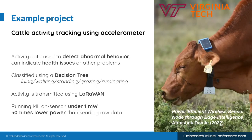Here's an example of a practical project analyzing cattle activity using an accelerometer. A decision tree model is used to analyze the accelerometer data and classify it into the activity of the cow: lying, walking, standing, grazing, or ruminating.